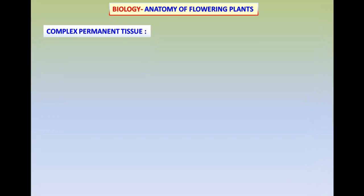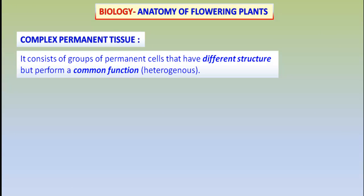Complex Permanent Tissues are those permanent tissues which have different types of cells which could be easily identified. Though the cells are different, they perform a common function. Hence, Complex Permanent Tissues are heterogeneous in their nature.